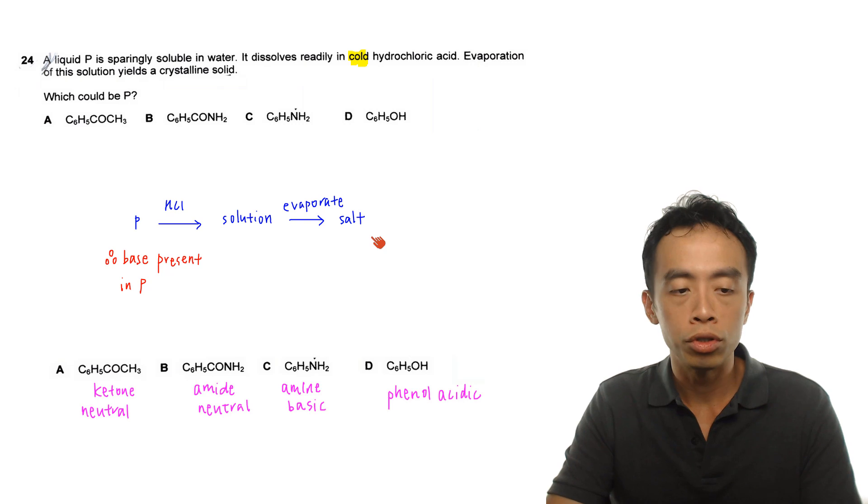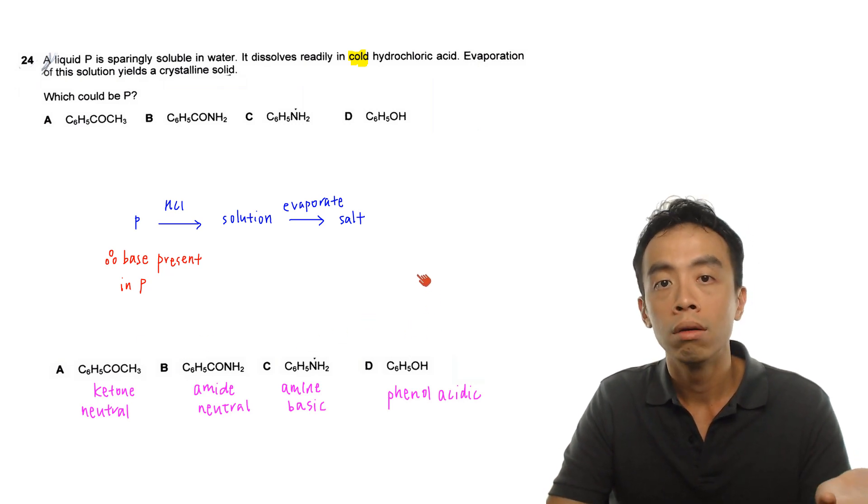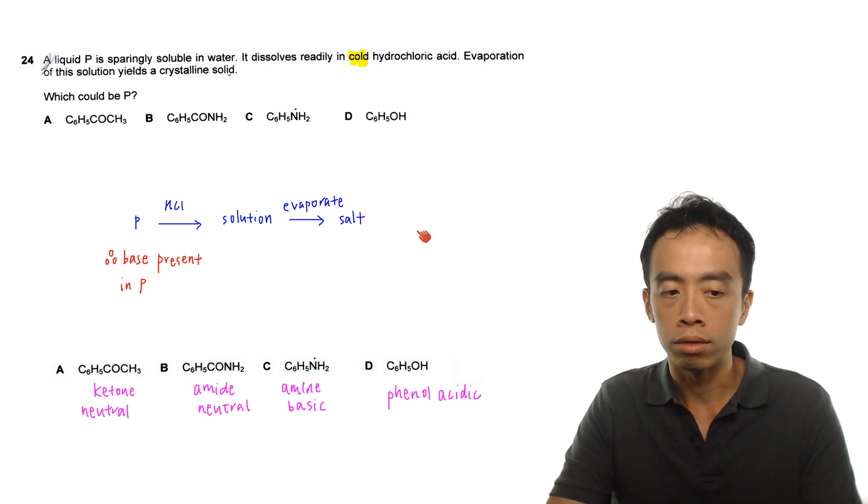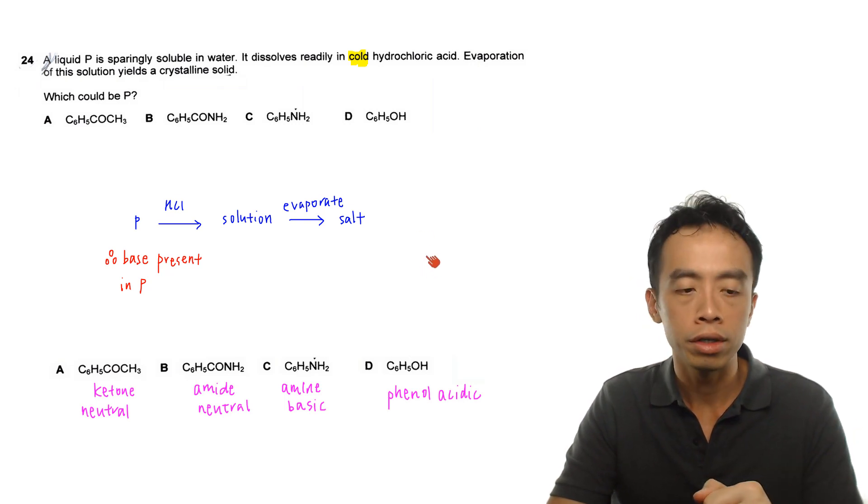So what this means is we just need to look at options A, B, C, D, and find the functional group which is alkaline or basic and can react with HCl. So this exercise is very simple. Now the first one, for A, this guy is a ketone. Ketones are neutral.